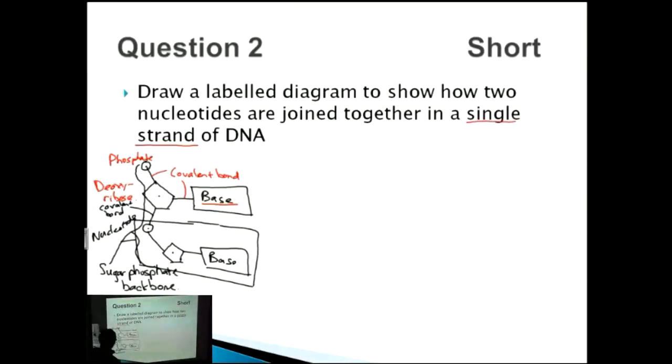And there you have it. So once again, a short question. So we're expecting around about four, maybe five different marks. So let's have a look at the different points that we've got. We talked about covalent bond, phosphate, deoxyribose, as well as the nitrogenous base over here. Four marks already. Most likely, you might get another mark for nucleotide as well. So we'd get maximum marks there.